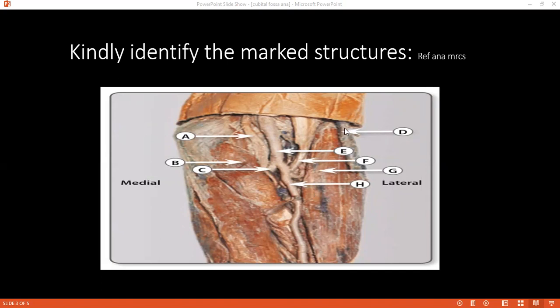Okay, what is D? D is cephalic vein. Okay, good. F, please. F is tendon of biceps brachii. And G is brachioradialis. Yes.